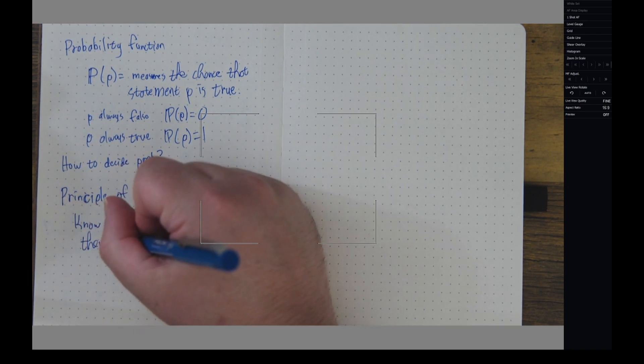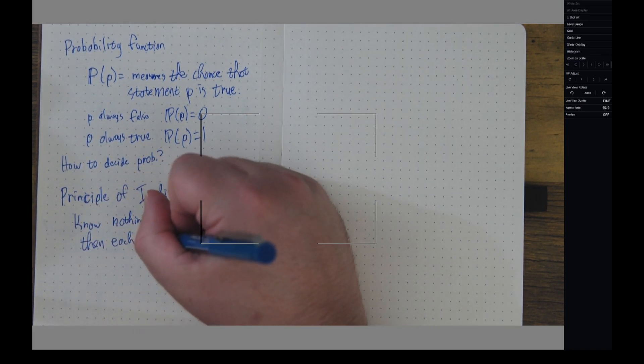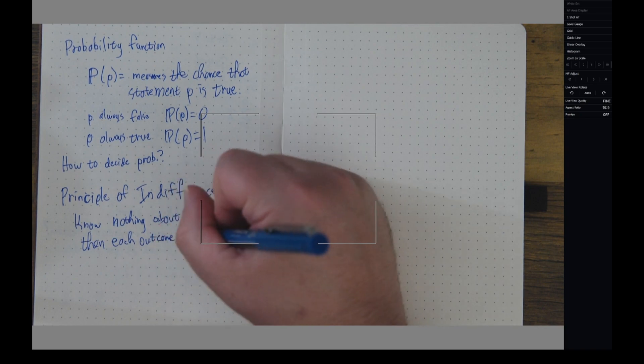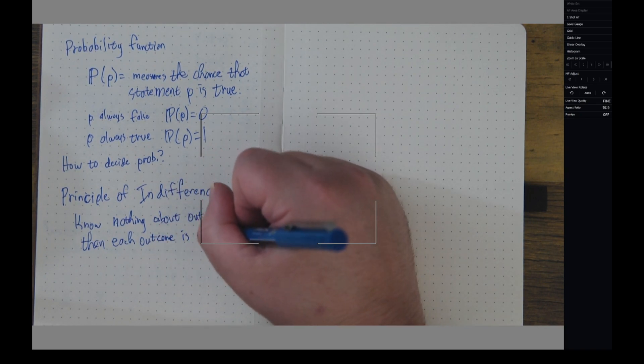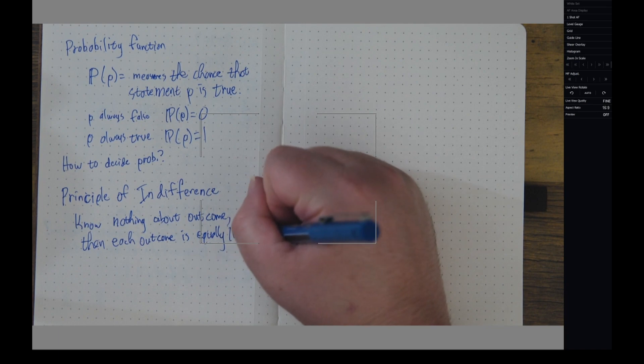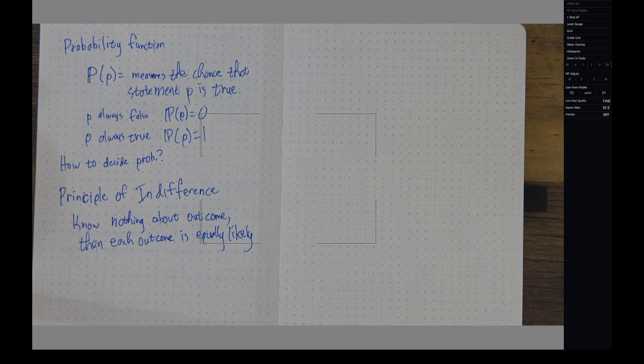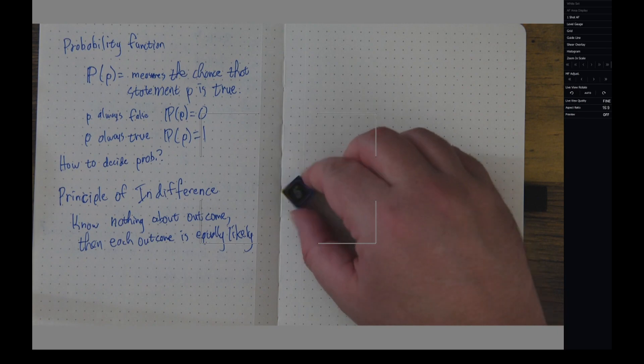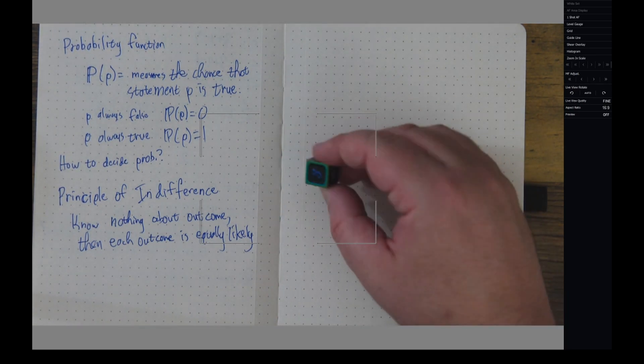So, in other words, if we've got a bunch of possibilities and we don't know what's going to happen - so in my six-sided die, the answer could be six, it could be five, it could be four, it could be two, it could be one.